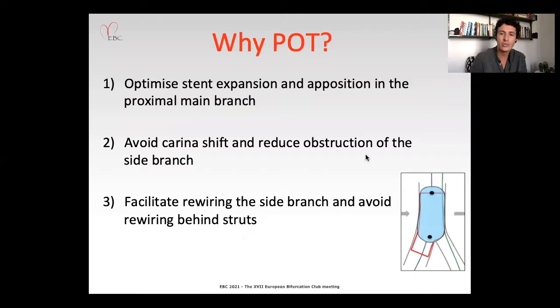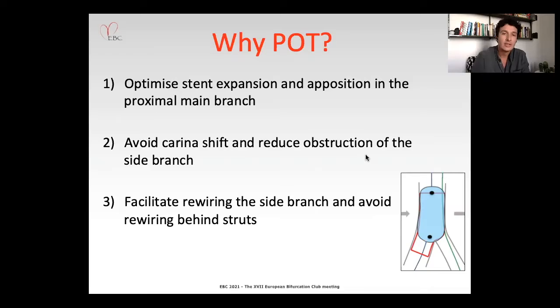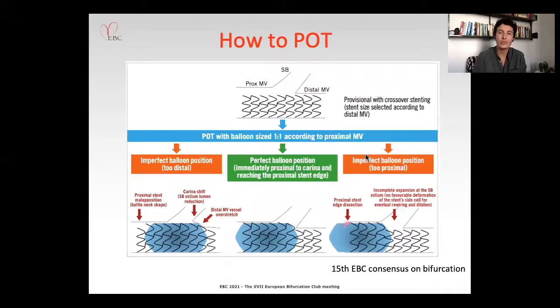I don't need to go too long on this topic — why POT — because the audience here, I think, is aware of why we have to perform POT, proximal optimization technique, basically for three reasons. First reason is to optimize stent expression and position in the proximal main branch. Second reason is to avoid carina shift and reduce the obstruction of the side branch by pushing aside the struts of the stent implanted towards the distal main branch. And then to facilitate rewiring the side branch, avoiding rewiring behind the struts for the same reason.